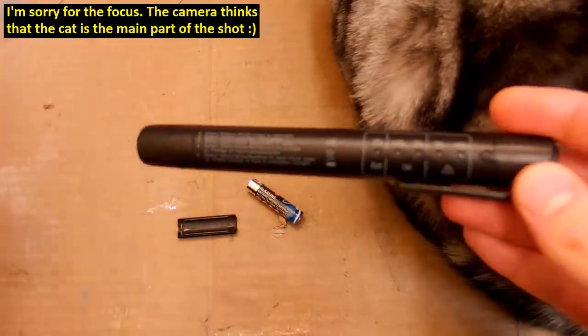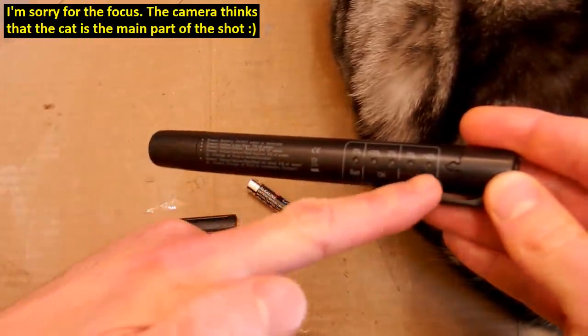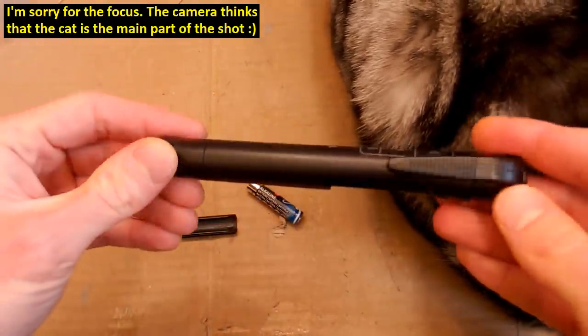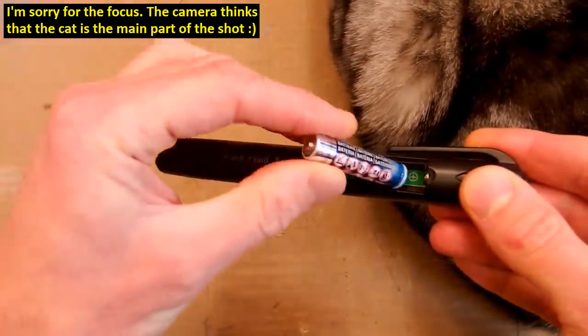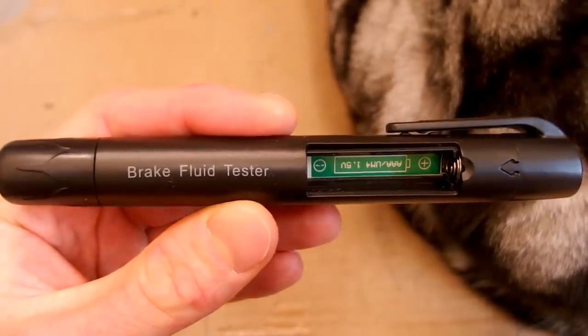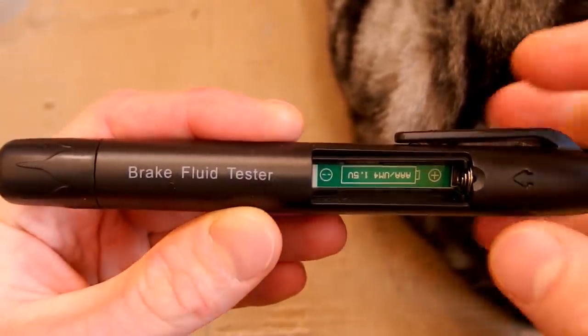It's basically this kind of pen with 5 LEDs, some description on it, and a space for one triple A battery 1.5 volts. So here you can see the battery space and the marking on it.